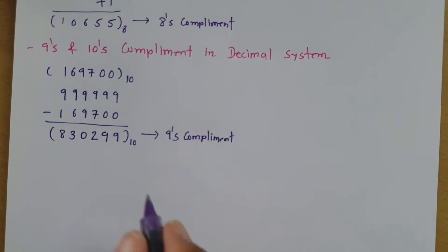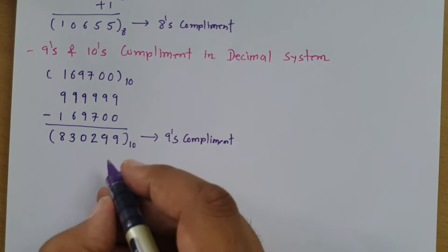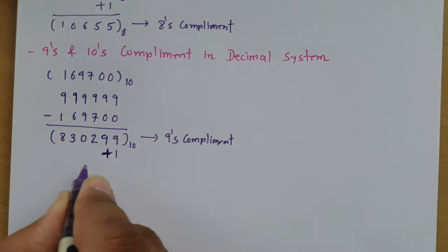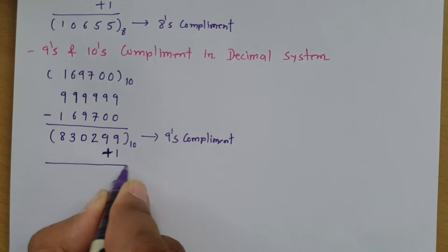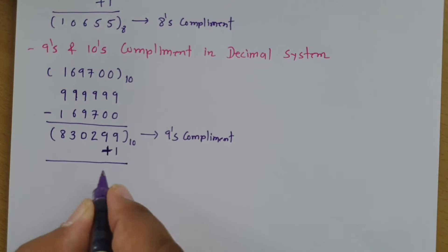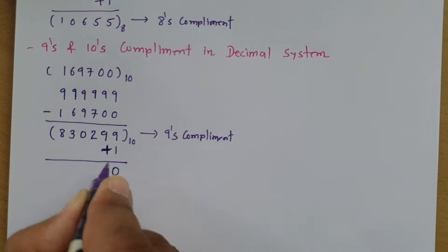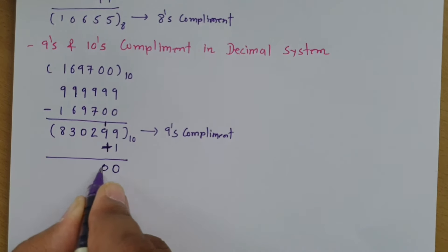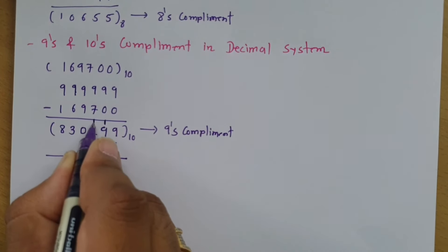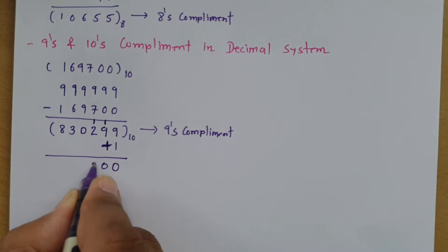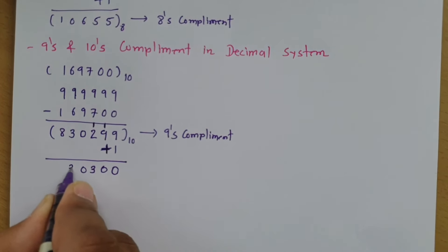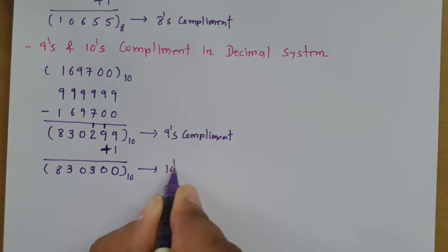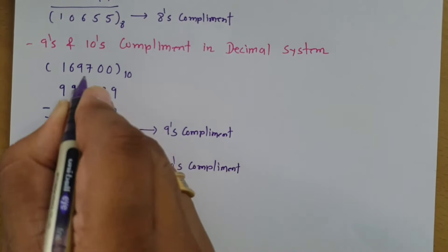Adding 1 to the 9's complement gives the 10's complement. So 9 plus 1 is 10 — write 0 with carry 1. Again 9 plus 1 is 10 — write 0 with carry 1. Then 1 plus 2 is 3, then 0, then 3 and 8. This is the 10's complement of the given number.